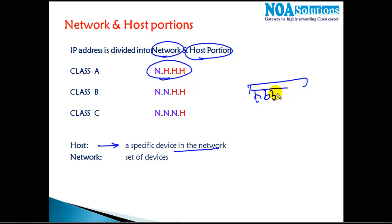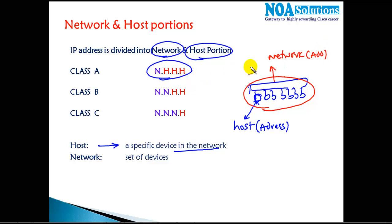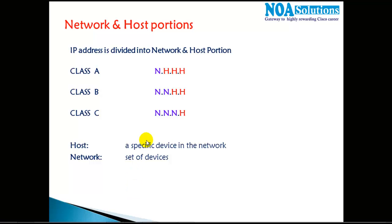For example, if we have a set of devices connected in a LAN — it can be a computer, a router, or any other device — each single device is identified as a host. The address assigned to that device is called the host address. A network address identifies a group of devices, whereas the host part identifies a single device within that particular network.